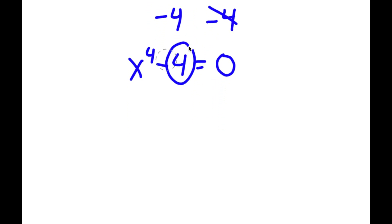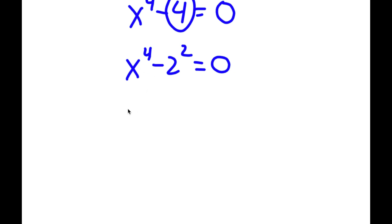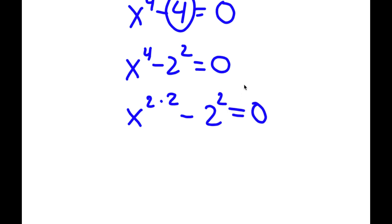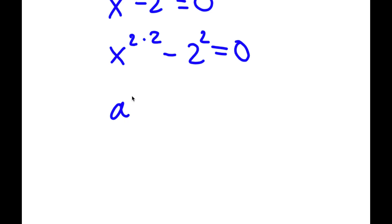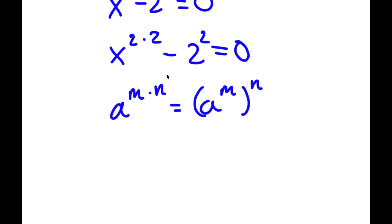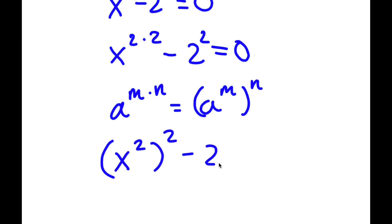Now I'm going to rewrite 4 as 2 squared, so I have x to the power of 4 minus 2 squared is equal to 0. And I'm going to write x to the power of 4 as x to the power of 2 times 2. Using the rule that a to the power of m times n equals a to the power of m to the power of n, I can rewrite x to the power of 2 times 2 as x squared to the power of 2, minus 2 squared is equal to 0.